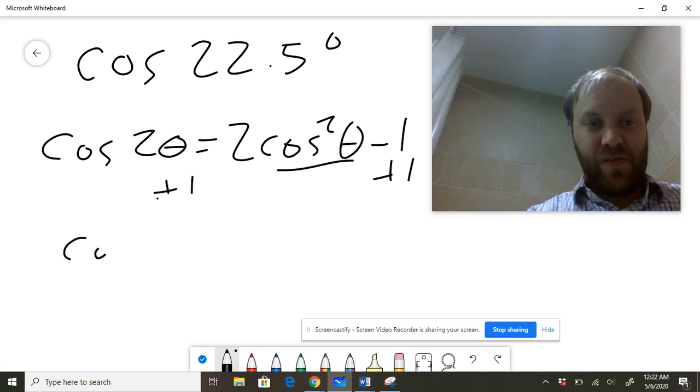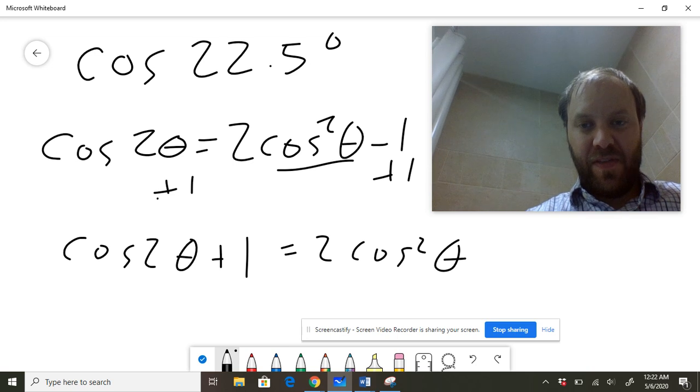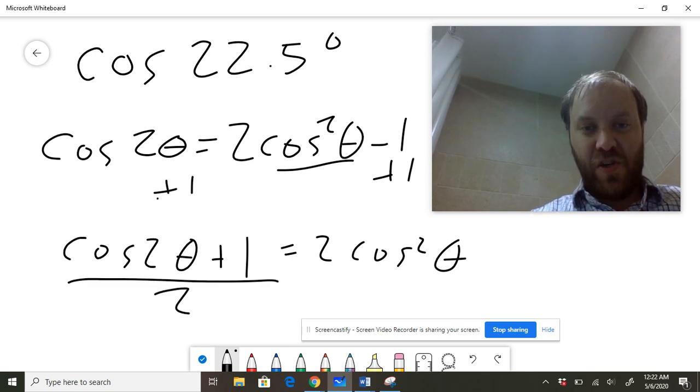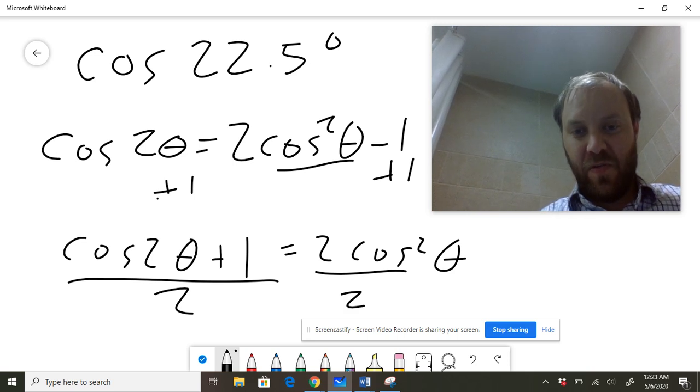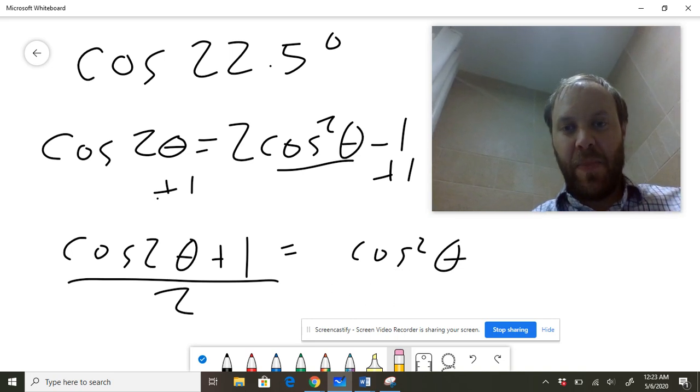So that's cosine of 2θ plus 1 equals 2 cosine squared of θ, and I'm going to divide both sides by 2. When I divide this by 2, it's going to knock out the 2 on that side, so we're going to have cosine squared of θ equals this thing over here, and then I'm going to take the square root.